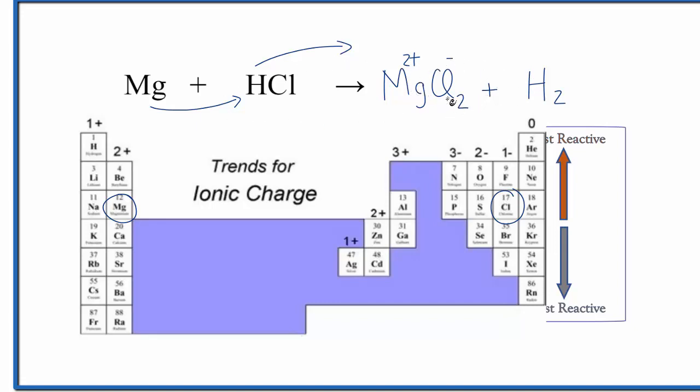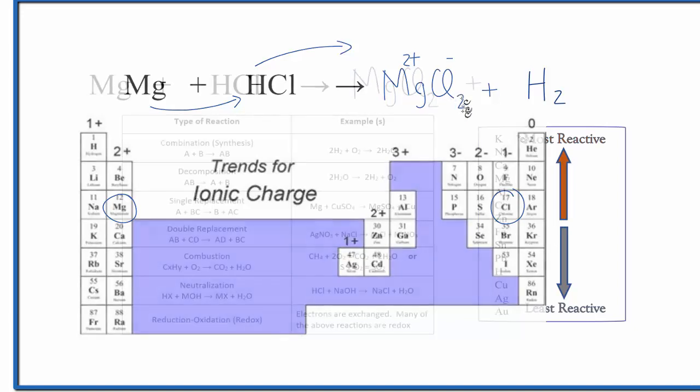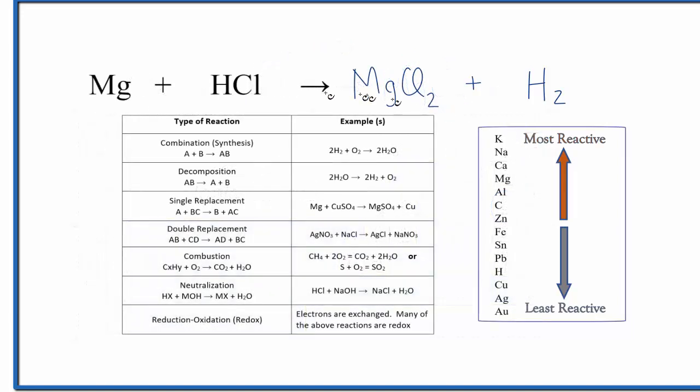It's not, however, balanced in terms of the number of atoms. So let's do that. I'll clean this up a little bit. And it looks like all we need to do to balance this equation is put a coefficient of two in front of the HCl. We have two H's here, two H's here. Two times the one Cl, so two Cls, two Cls, and then one magnesium on each side. So that's the balanced equation.